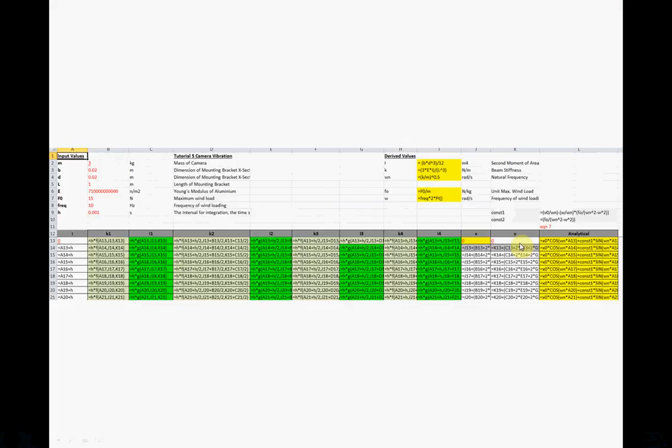In column J is the solution to the first-order differential equation. In K is the solution to the second first-order differential equation. And then over here in column L is the analytical solution. To simplify matters, there's a number of constants here in the analytical. And in cell, I think it's - my eyes are going - I think it's in cell... Well anyway, constant one and constant two, we derive them there.